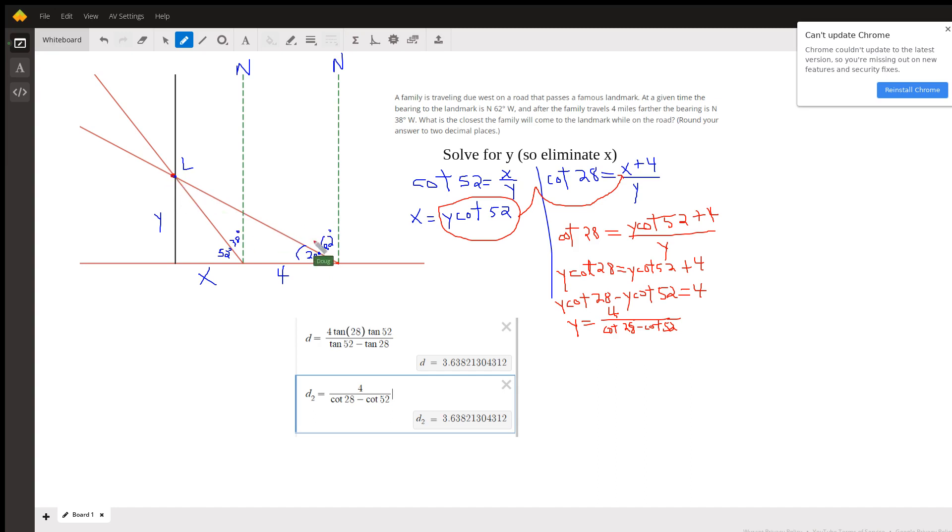They travel four more miles west. If they look north and then 38 degrees west, they can see the landmark, and that means this angle is 52 degrees.